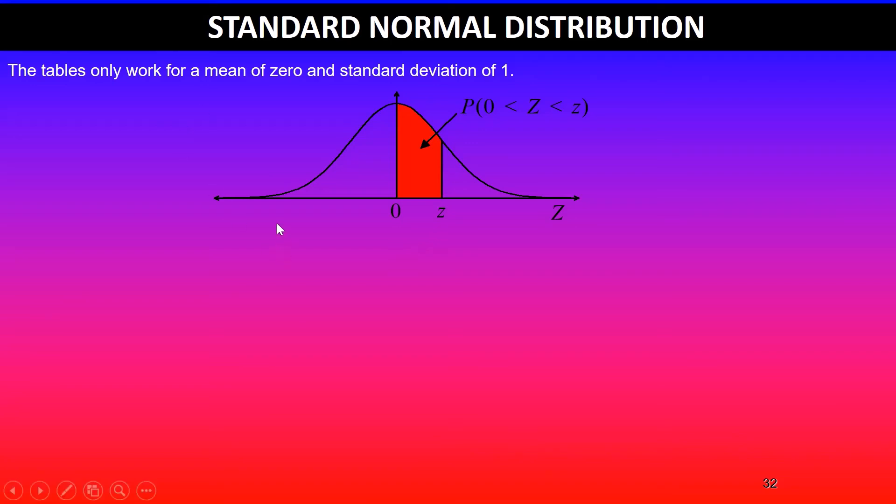Just keep in mind that the total area underneath the bell-shaped curve will be 1. So if I shade everything above 0, that will cover 0.5. So the probability between 0 and z will be less than 0.5 as indicated here.